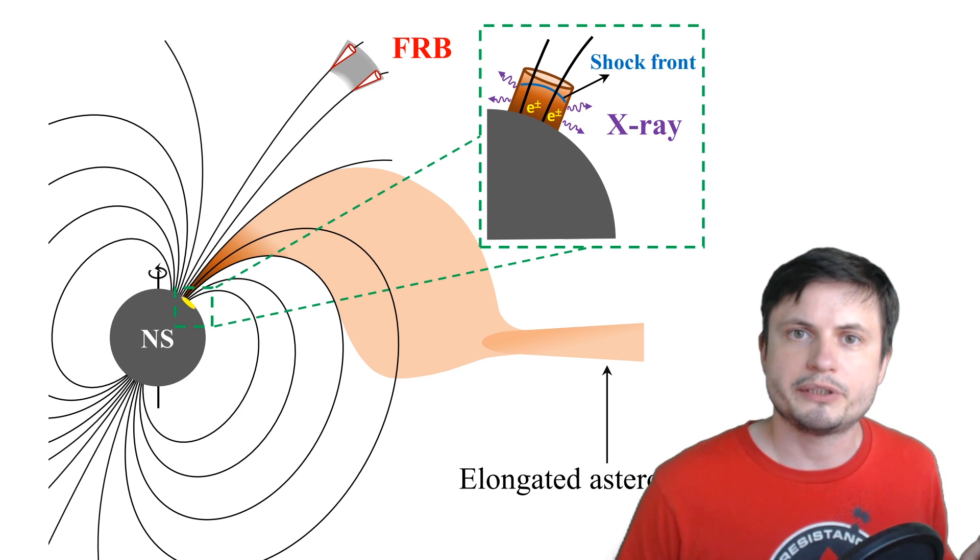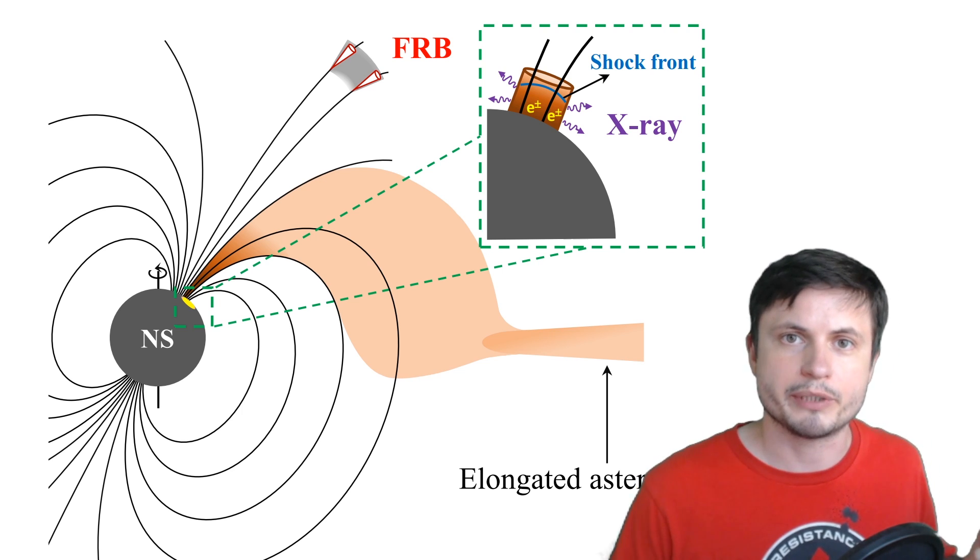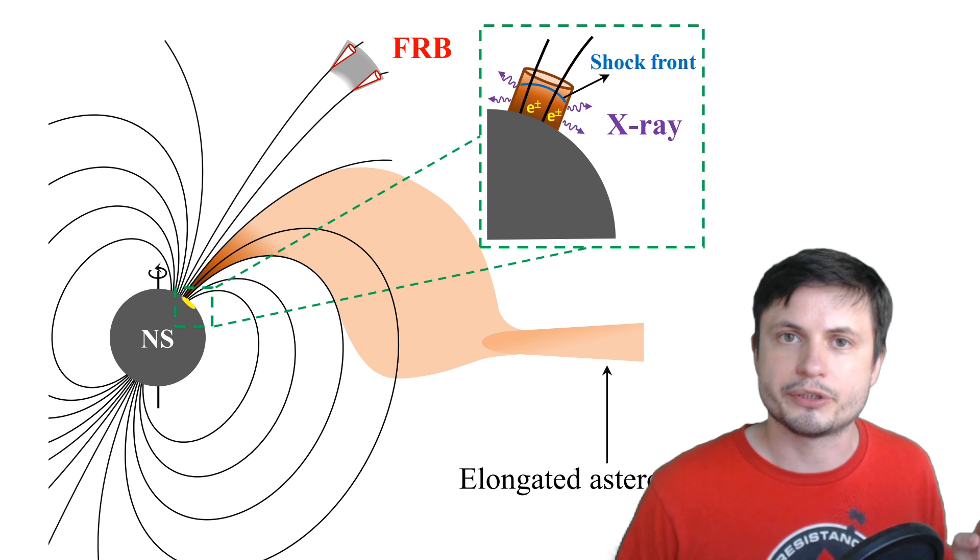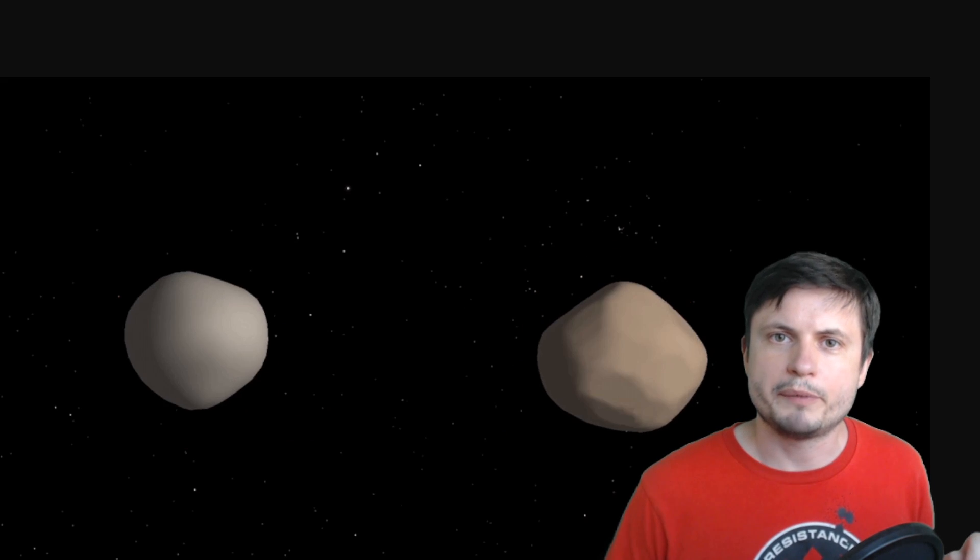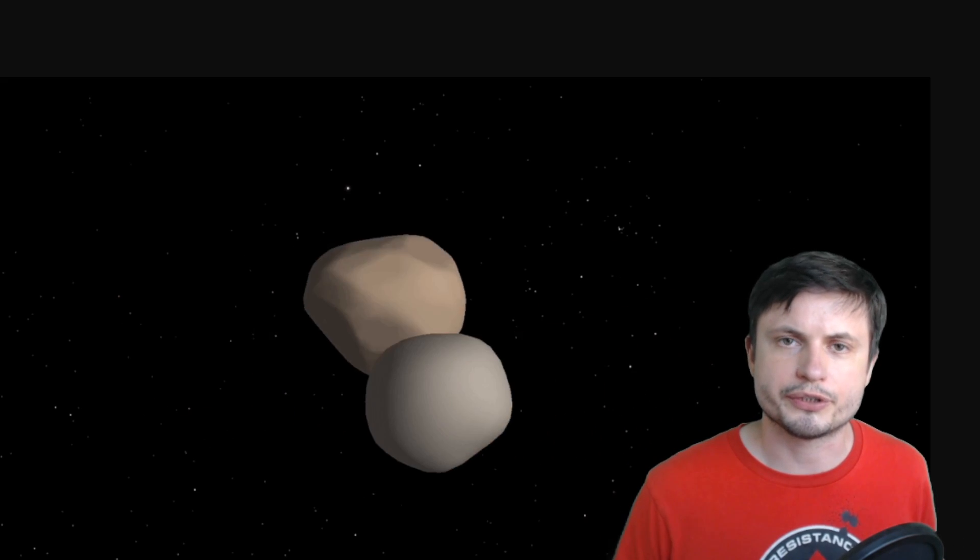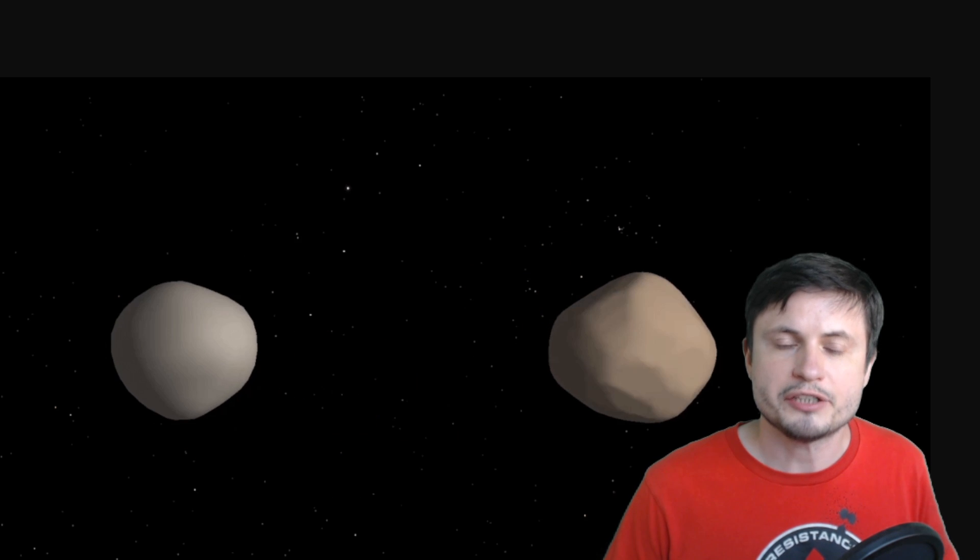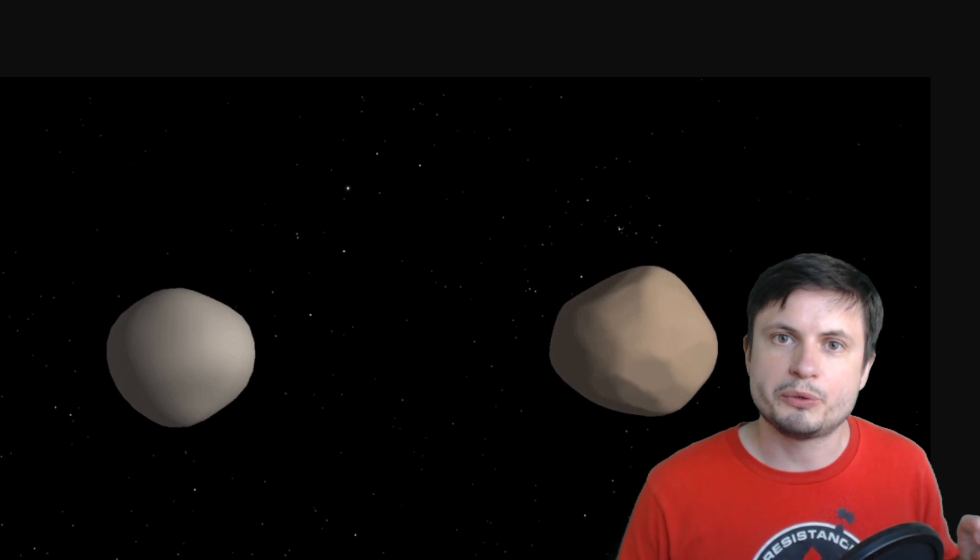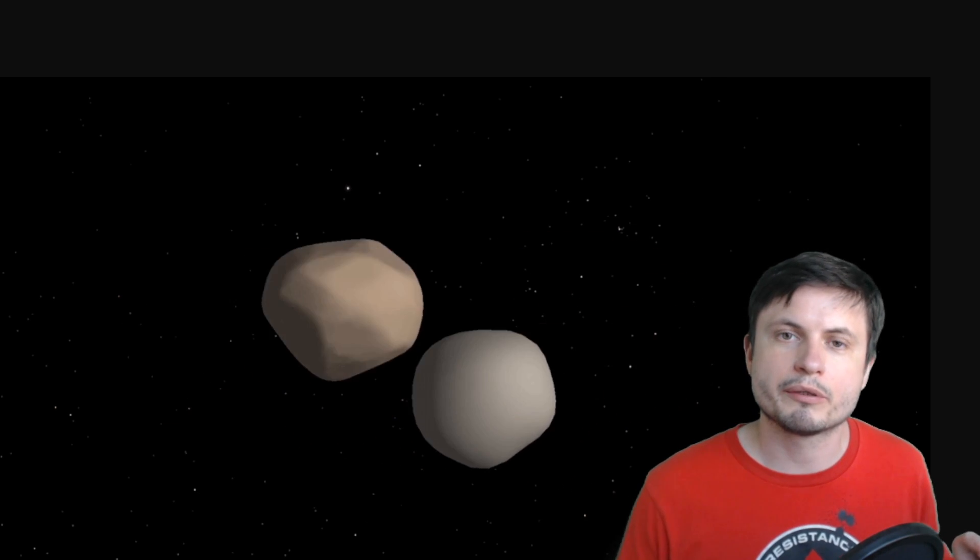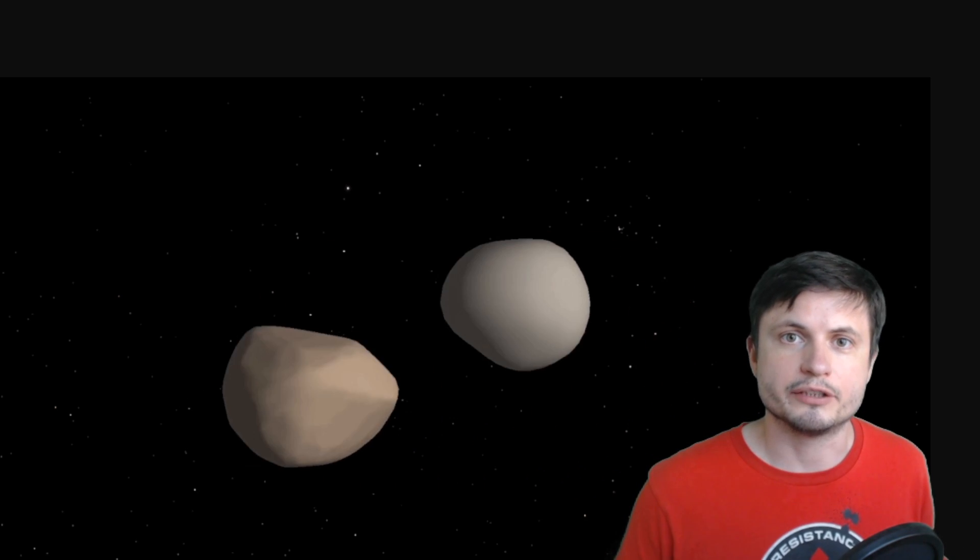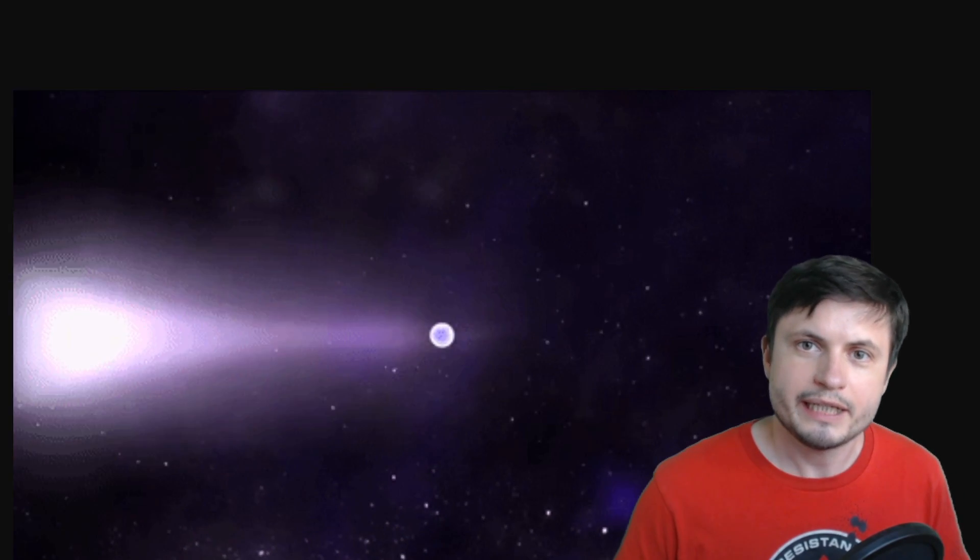But interestingly, in this particular detection, there were two different peaks of x-ray radiation and the scientists behind this paper suggest that it's very likely that this asteroid, as it was falling into the neutron star, got broken up into two pieces, with both pieces then slamming into the neutron star, but with a slight delay of about 30 milliseconds. And based on this delay, the scientists can even estimate the size of the asteroid, suggesting that the distance between these two pieces was roughly around 3.5 kilometers, or I guess the size of a typical asteroid here in the solar system.